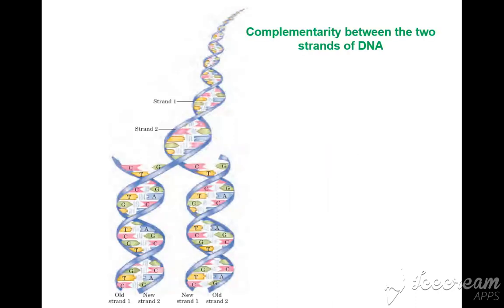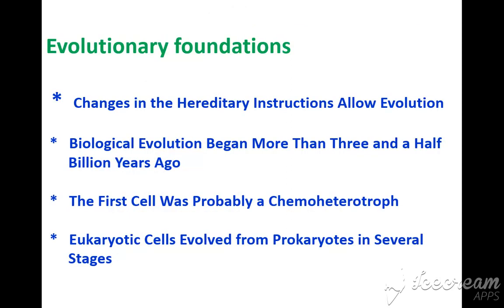In the genetic foundation, there is complementarity between the two strands of DNA (strand one and two). In the evolutionary foundation, changes in hereditary instructions allow biological evolution. Evolution began more than three and a half billion years ago; the first cell was probably a chemoheterotroph, and eukaryotic cells evolved from prokaryotes in several stages.